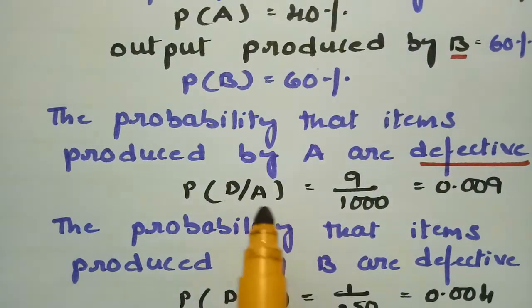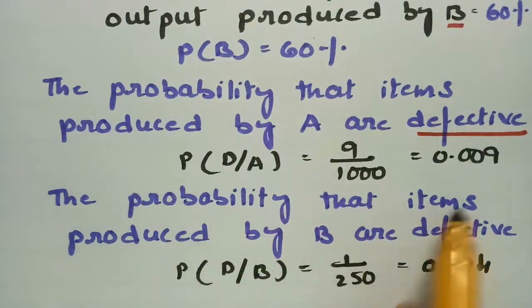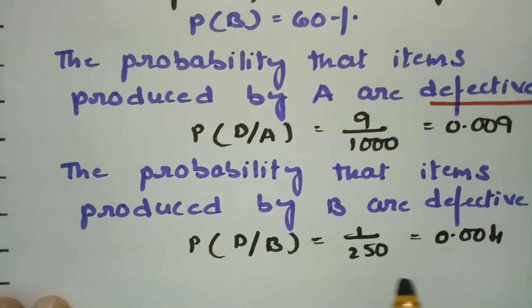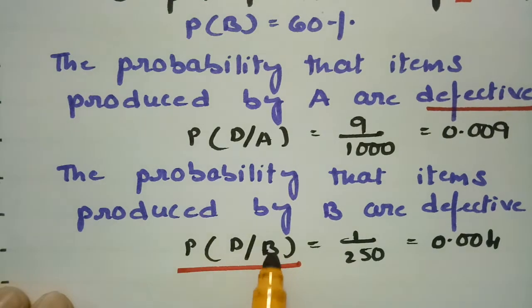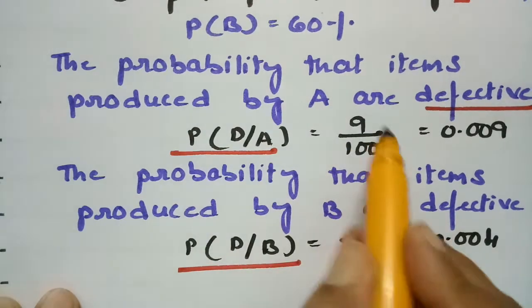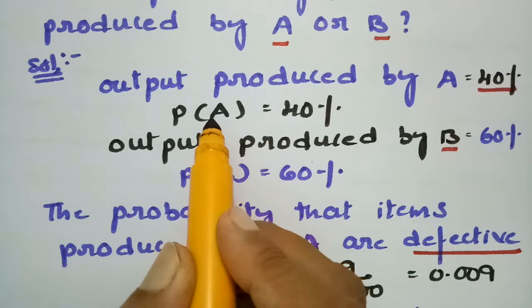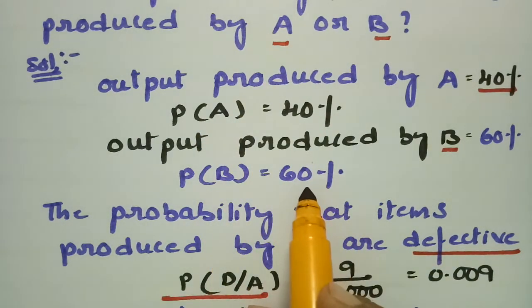The probability that items produced by A are defective is 9 by 1000. The probability that items produced by B are defective — 1 item in 250 produced by B is defective — so we write it as 1 by 250. Machine A produces the total output at 40 percent and machine B produces total output at 60 percent.